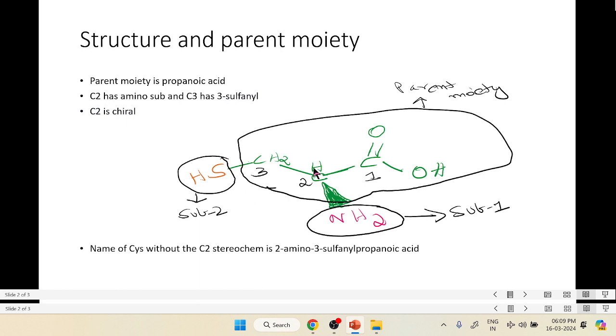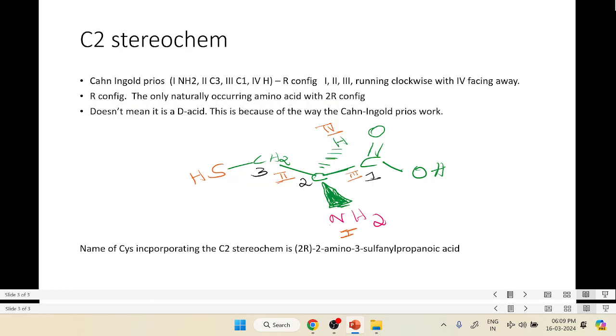Now, let's look into the stereochemistry of C2 and this is going to give us a very important and interesting and different situation compared to the earlier chiral naturally occurring amino acids that we have seen. Let's see the C2 stereochemistry, the Cahn-Ingold priorities.